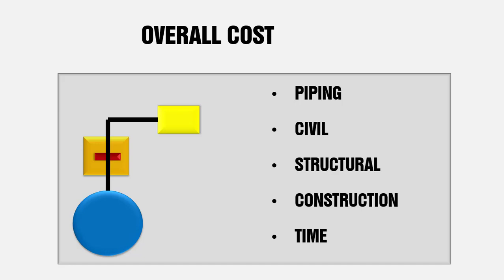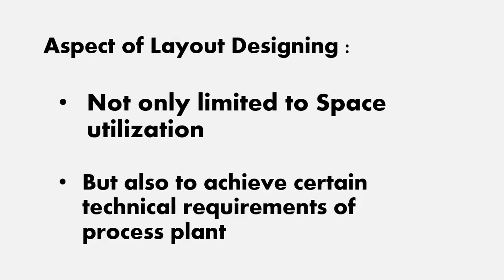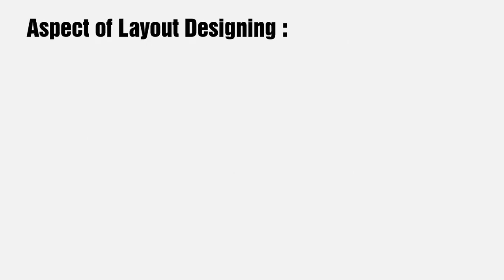You can imagine the amount of time invested in the previous arrangement. There are also other aspects of savings, such as electrical cables and instrumentation cables. So basically, if you plan the layout in such a way that you can effectively use your plot and space, you can really cut down your overall cost. But layout designing is not only about the utilization of space — it is also about achieving certain technical requirements of process plants, because there are many requirements for operating equipment and accessing valves, as well as for operations and maintenance.